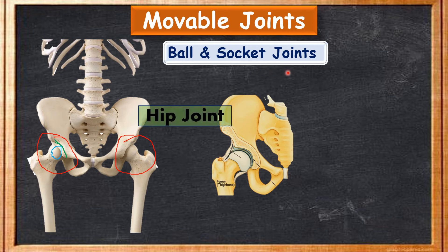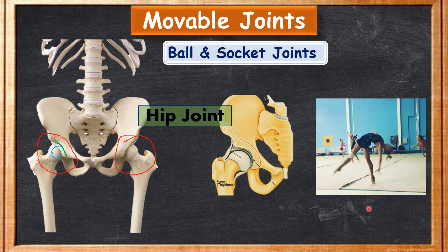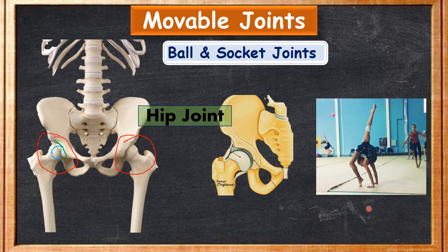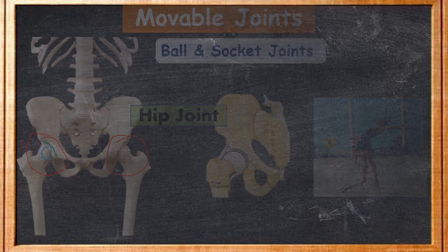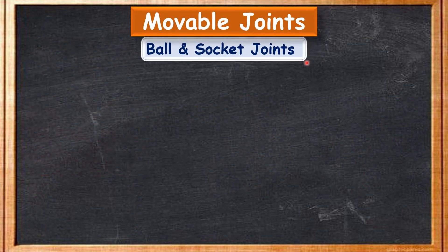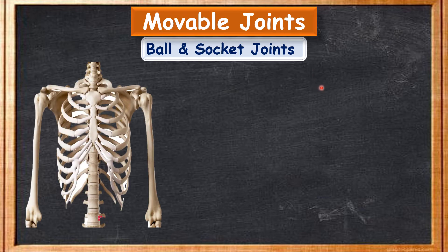For example, have you noticed a ballet dancer and the way she moves her legs, arms, and body? That movement is possible because of ball and socket joints. You can see the example on screen — how beautifully this girl is moving her body. Now let's see the shoulder joint. You can see on the screen the ribcage and the humerus.